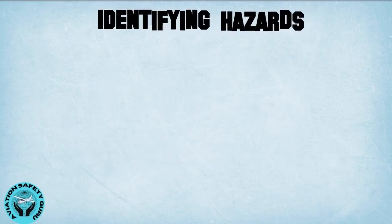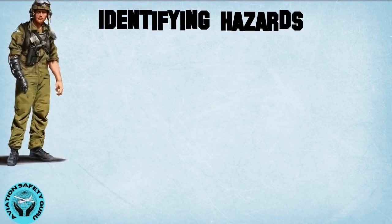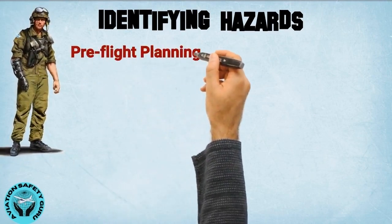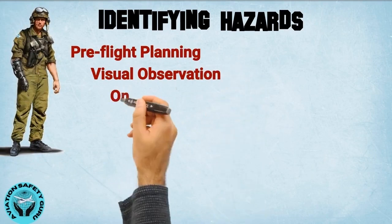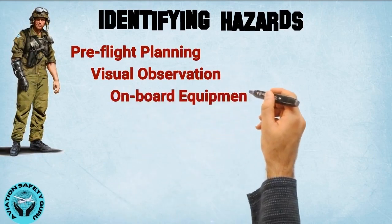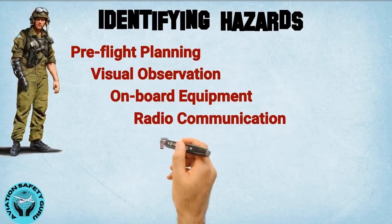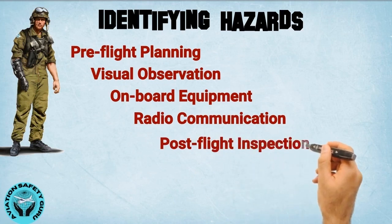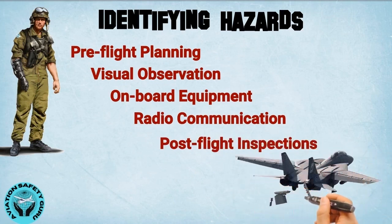Identifying hazards. Pilots can use several ways to identify hazards: pre-flight planning, visual observation, on-board equipment, radio communication, and post-flight inspections. Pilots often use combinations of methods for hazard identification.